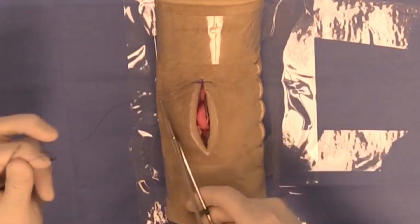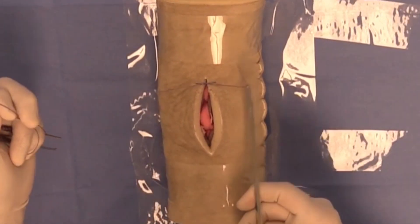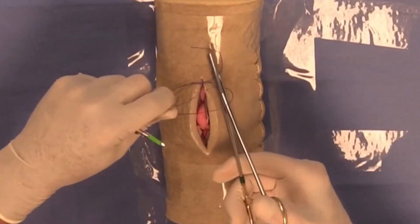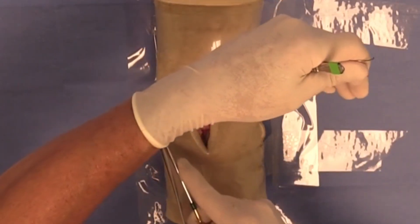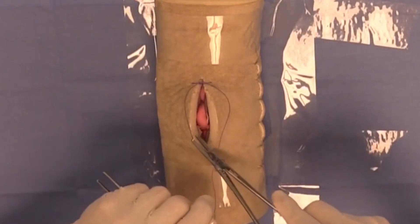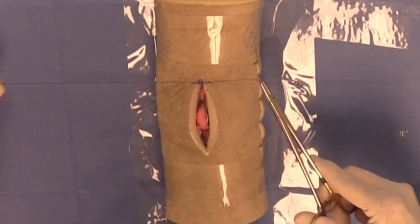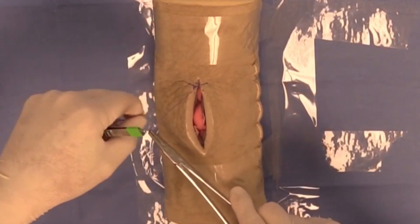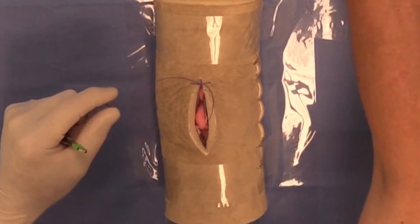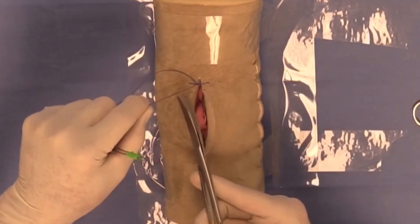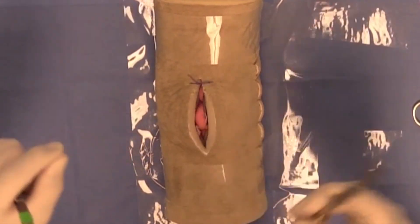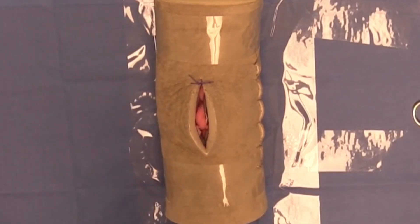Now you could put additional throws on top of your surgeon's knot, so this would be a surgeon's knot followed by two additional throws. Once I've cut these ends, I've constructed a simple interrupted suture tied with a surgeon's knot and two additional throws.